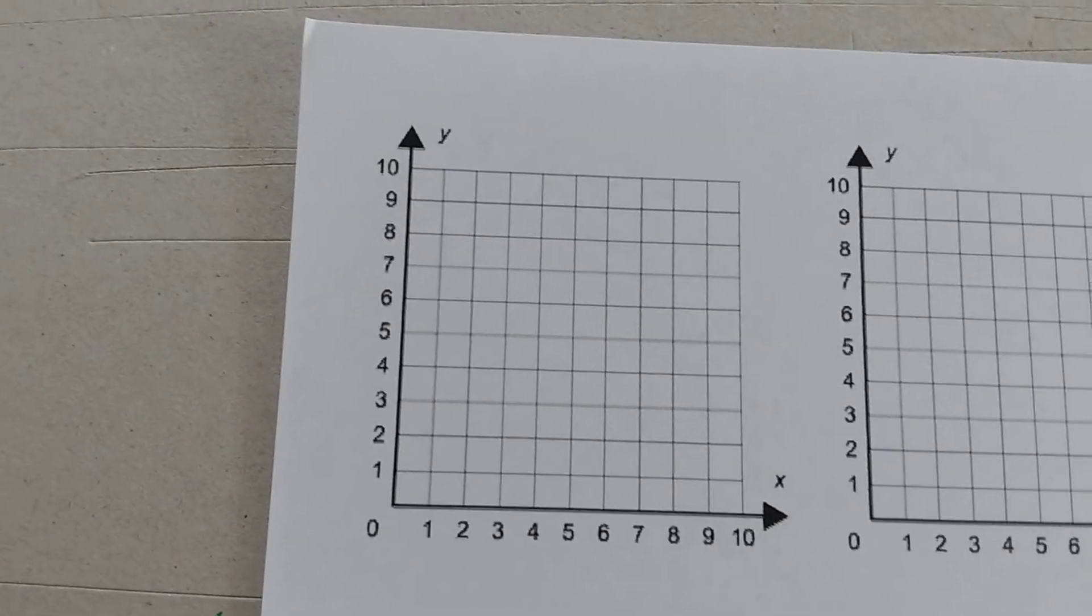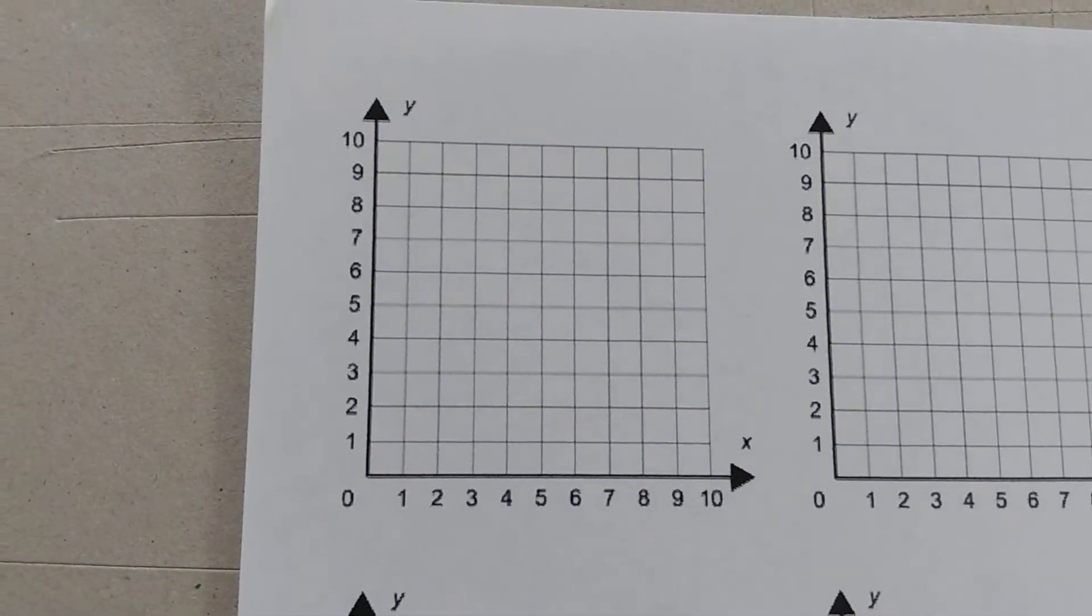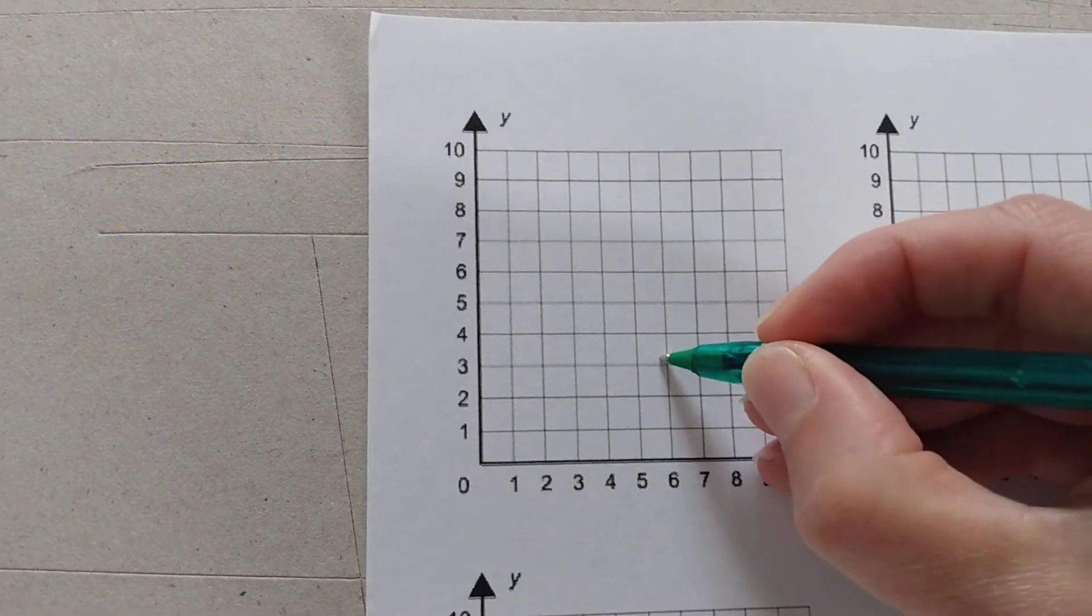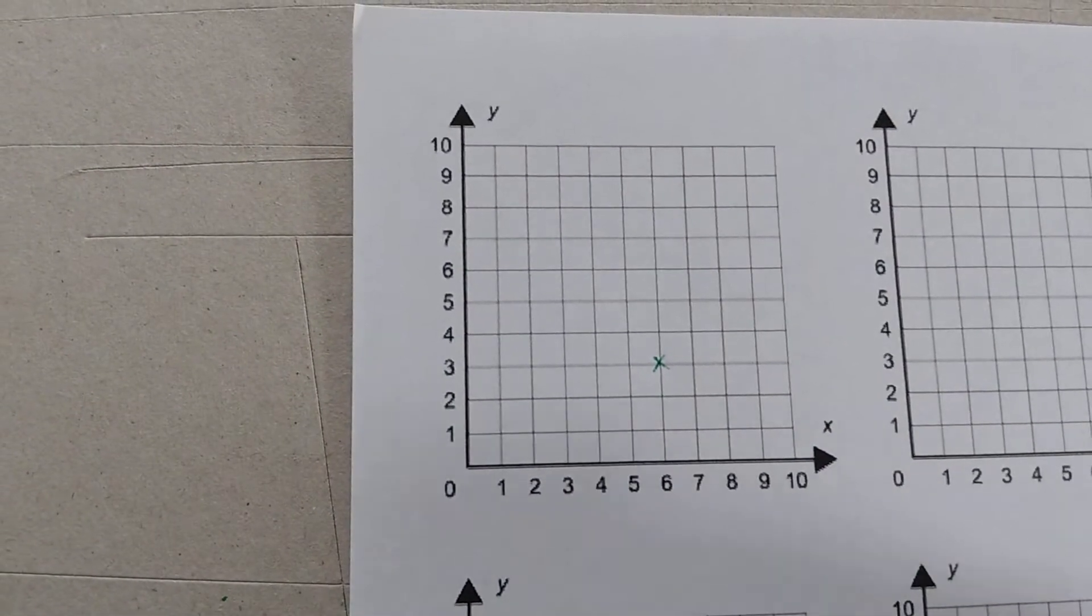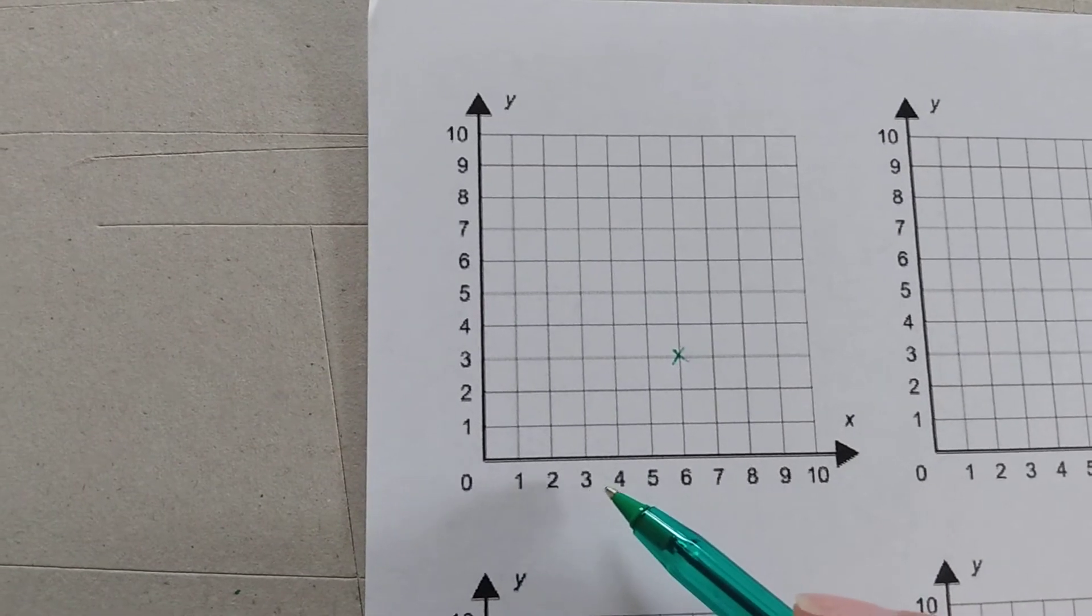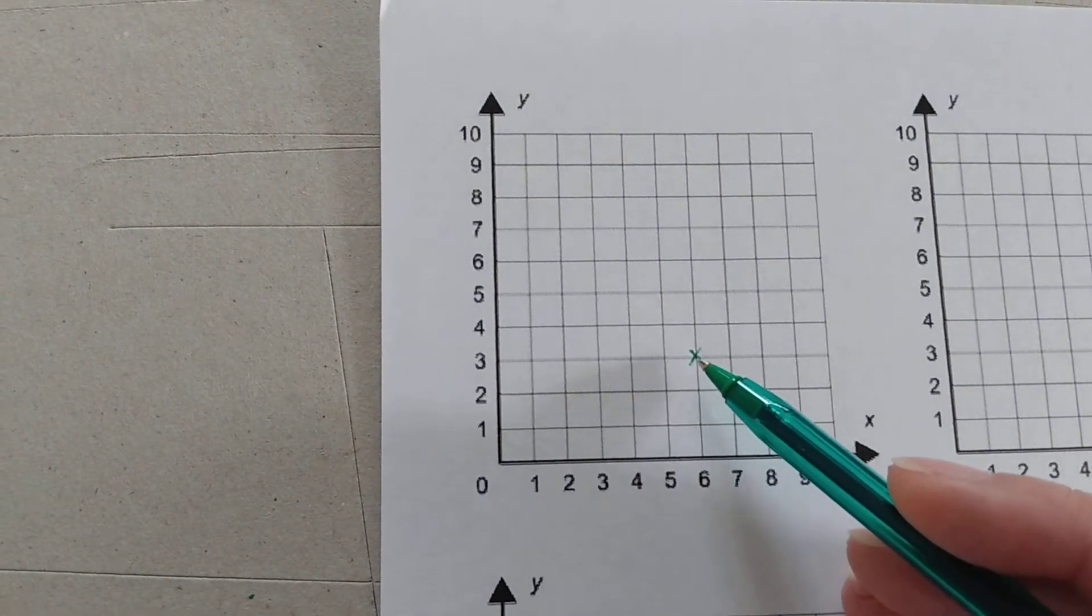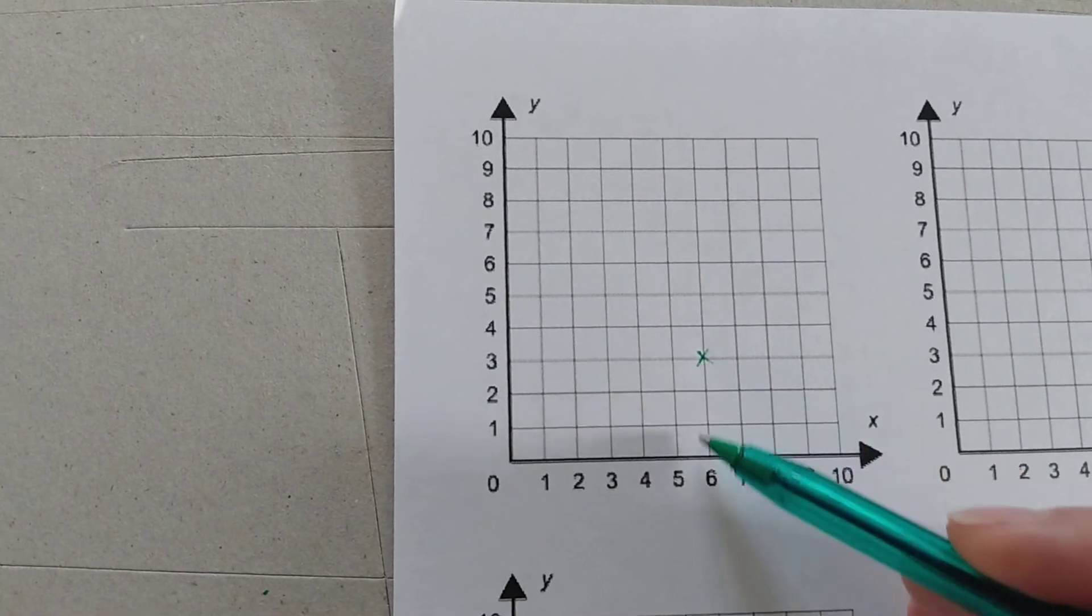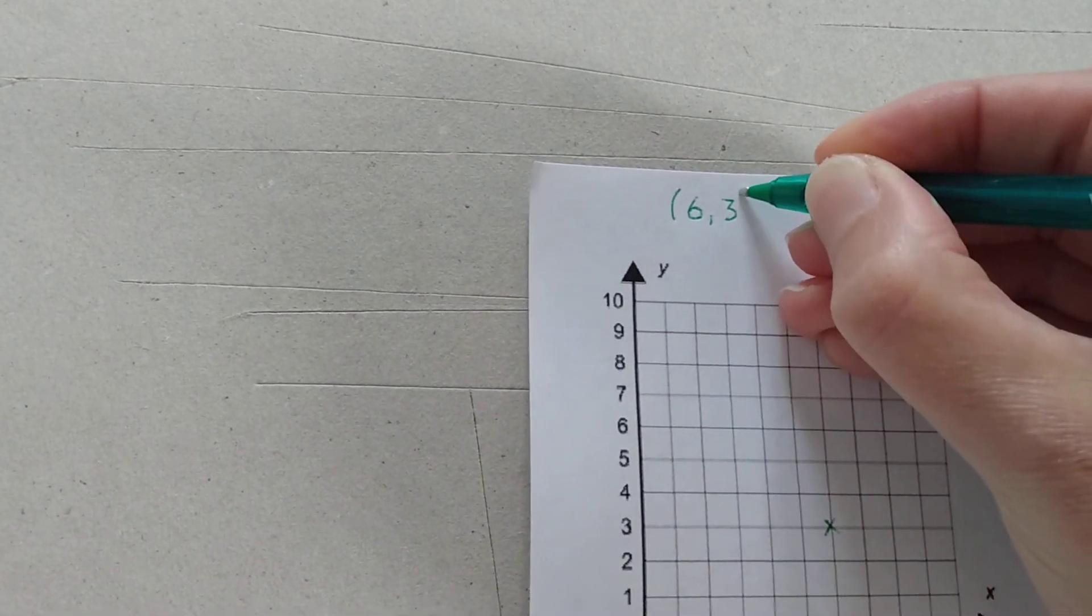Now I'm going to mark a little cross somewhere and you're going to help me work out what coordinates that cross is on. I wonder if you can remember which order we read our coordinates. So first of all I'm going to put my cross here. So you need to tell me the two numbers that relate to that cross starting with the x-axis. We go along the corridor and we've got to number 6 and then we go up the stairs and we've got to number 3. So the coordinates for this cross are 6,3 and we would write that in brackets as 6,3 close brackets.